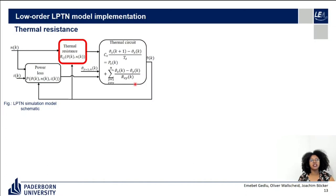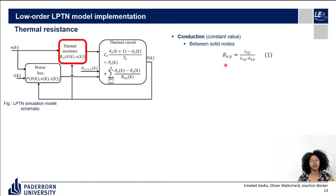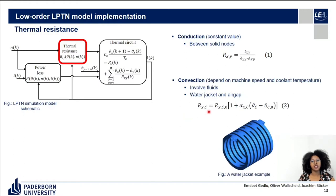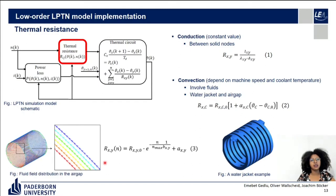Thermal resistances can be divided into conductive and convective, depending on the mode of heat transfer. Conductive thermal resistances are between solid nodes — such as between stator yoke and stator winding, or between stator yoke and stator tooth — and generally do not vary with the operating point, so they are directly part of the parameter identification. Convective thermal resistances involve fluids, so their values vary with operating point. For example, the thermal resistance between the water jacket and stator yoke depends on water temperature and is modeled using a linear equation, with parameters R and alpha as part of parameter identification. Similarly, the thermal resistance connecting the stator winding to the PM involves the air-gap fluid and depends on shaft speed, modeled with parameters B and alpha as part of parameter identification.